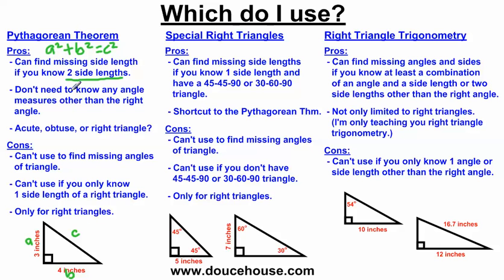Also, you don't need to know any other angle measure other than the right angle. Since I know this is a right angle and I know two side lengths, I can figure out the third side. You can also use the Pythagorean Theorem to tell if you have an acute triangle, an obtuse triangle, or a right triangle, depending upon what a squared plus b squared equals compared to c squared.